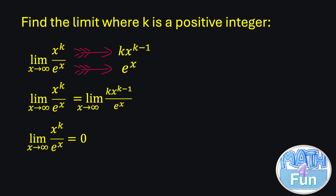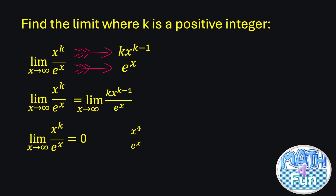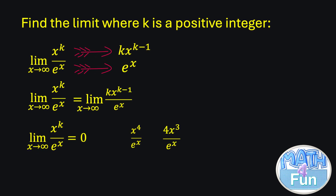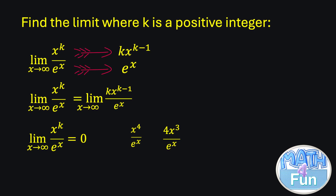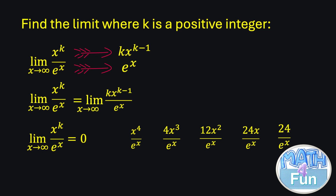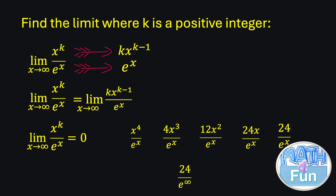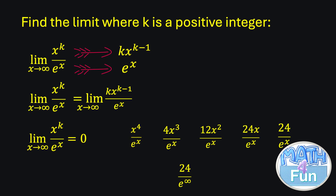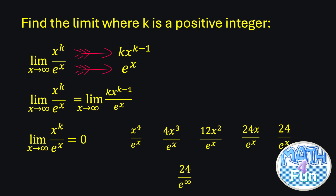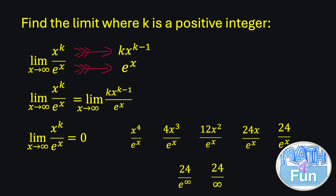Here's a simpler way to see this. Let's give k a specific number, say k equals 4. The expression becomes x⁴ / e^x. Deriving x⁴ gives 4x³; deriving again gives 12x²; again gives 24x; again gives 24. After several derivatives you get a constant. So you have 24 / e^x, and the limit as x → +∞ of 24 / e^x equals 24 / e^∞ equals 24 / ∞, which equals 0.